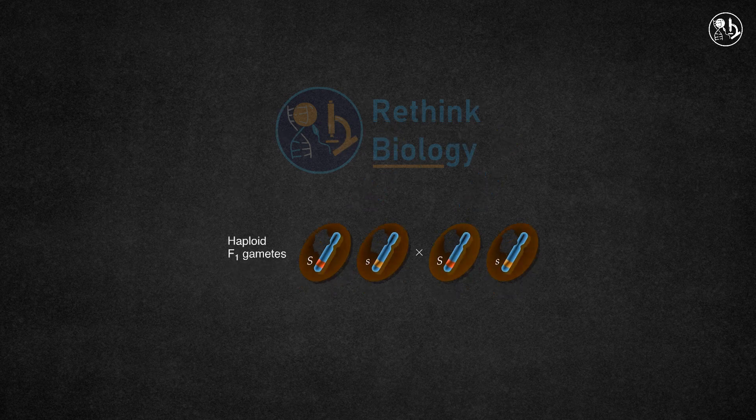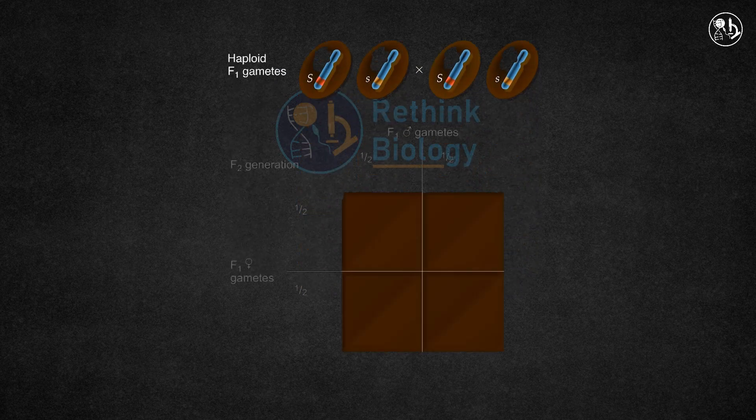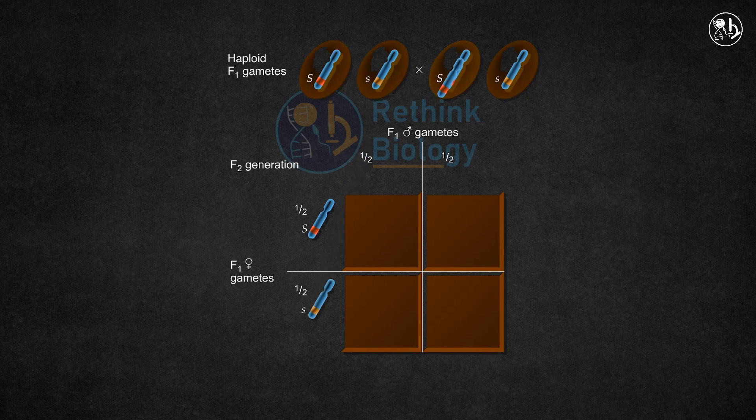The F1 parents produce either capital S or small s gametes and a Punnett square can be used to depict the gametes and their possible unions.